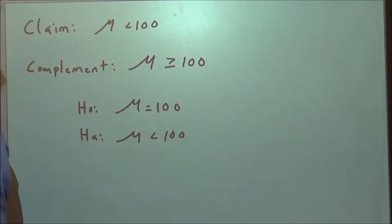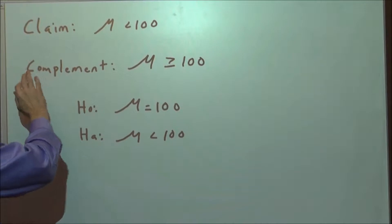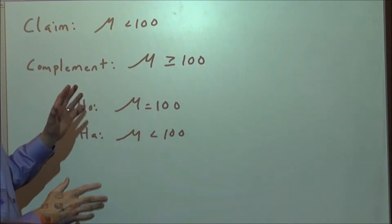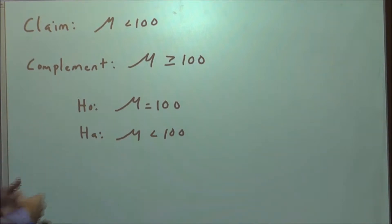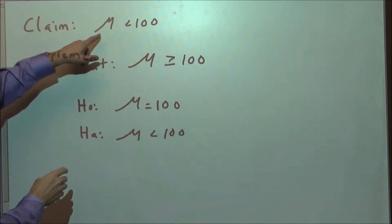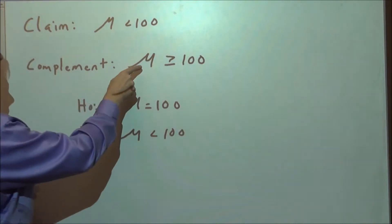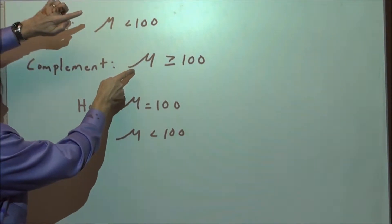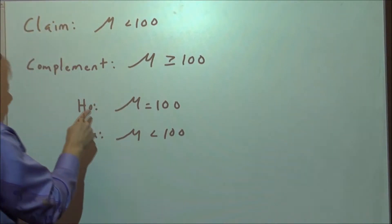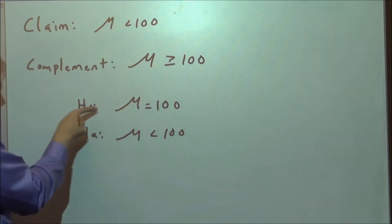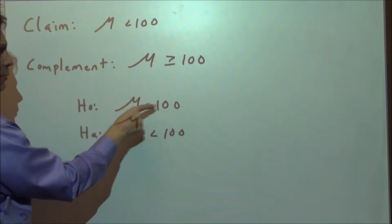Let's talk about p-value and finding statistical significance. If we go back to the problem where a student claims that on average there's less than 100 minutes spent on social media by students, we write down the claim in terms of the parameter mu, then we write down the complement to that. One of these things has to be true and one has to be false. The one with the condition of equality becomes the null — we collapse it down to mu equals 100.